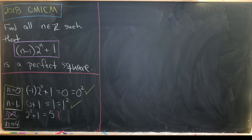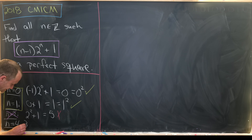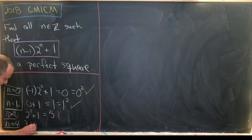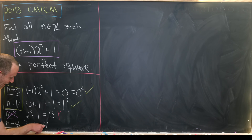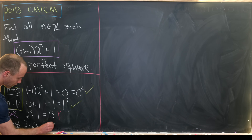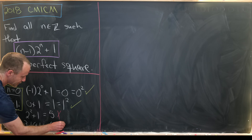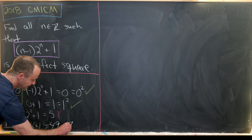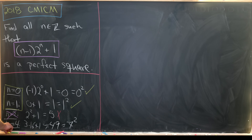Let's go to n equals 4. We get 4 minus 1, which is 3, times 2 to the 4, which is 16, plus 1. That gives us 49, which is clearly 7 squared. So we've got another solution when n equals 4.